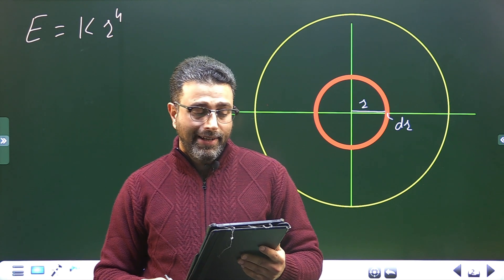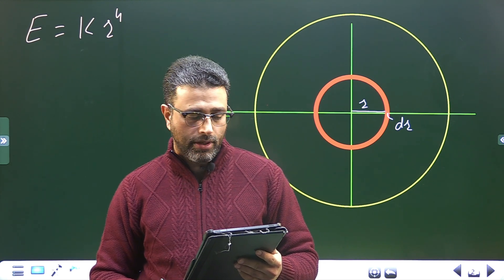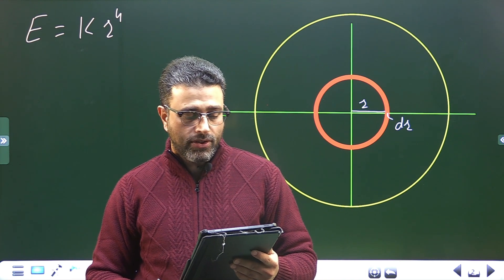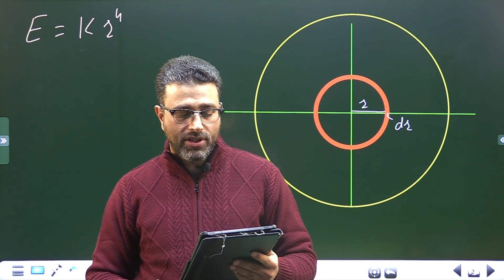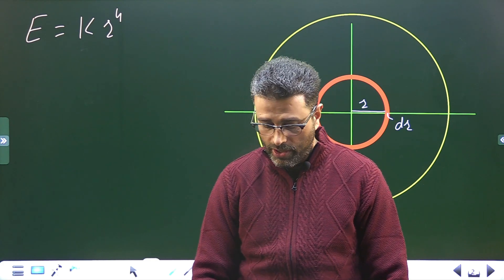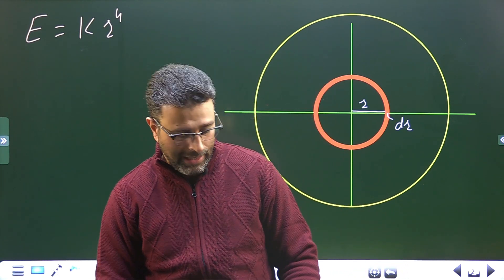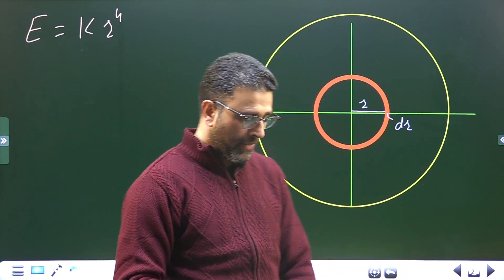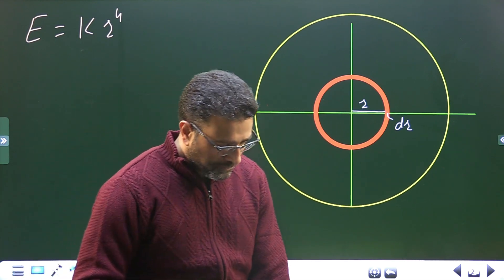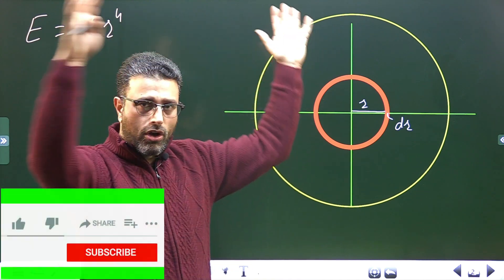Here r is the radial distance from the center and k is a constant. What is the volume charge density ρ of the charge distribution? We have to find the charge density, which we are already told is not uniform.